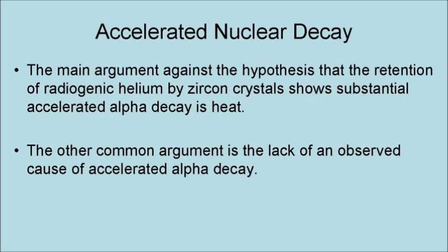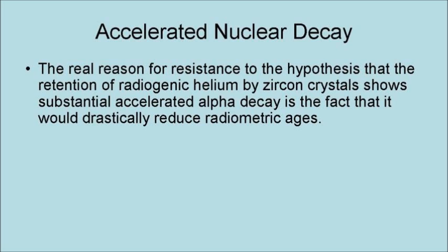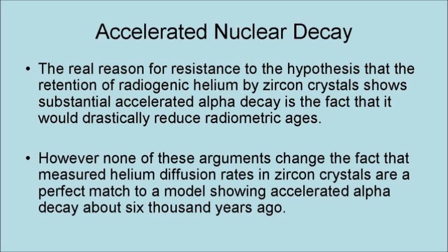The other common argument is the lack of an observed cause of accelerated alpha decay. However, there are theoretical answers to both. The real reason for resistance to the hypothesis that the retention of radiogenic helium by zircon crystals shows substantial accelerated alpha decay is the fact that it would drastically reduce radiometric ages. However, none of these arguments change the fact that measured helium diffusion rates in zircon crystals are a perfect match to a model showing accelerated alpha decay about 6,000 years ago.